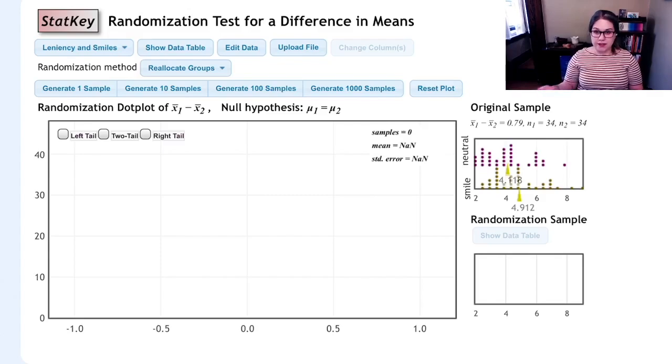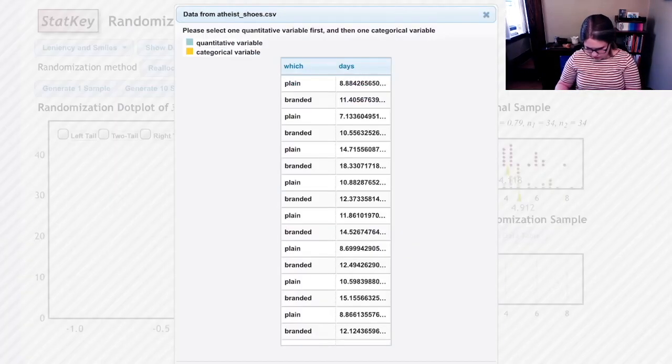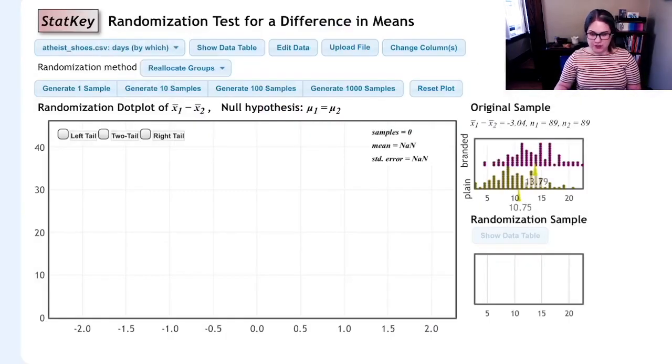This data set isn't available in StatKey, so I'm going to need to upload it. Now I've uploaded my data and you can see the plot of the original sample there. The ones with the branded tape are the purple dots and the ones with the plane tape are the orangey brown dots. We can see the means of those two groups and the observed difference in means negative 3.04. It looks like they did the subtraction in the opposite direction, but it'll turn out basically the same.